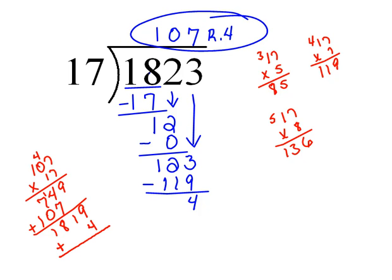So we did our multiplication first, and then we have to add in that remainder. So when we add in the remainder, we get 9 and 4 is 13. 1 and 1 is 2, 8, 1. So 1,823. And that's exactly what we started with. So our problem checks.